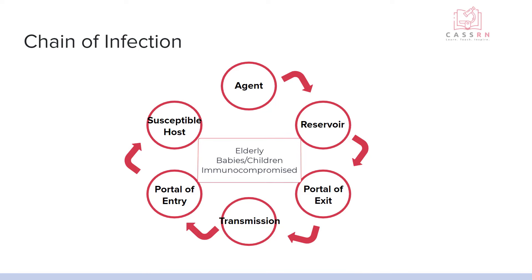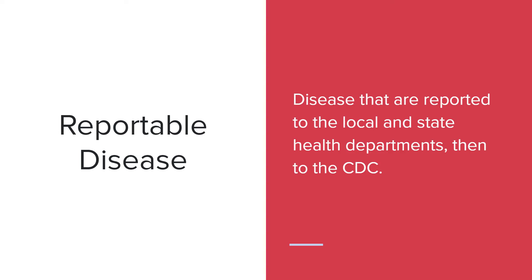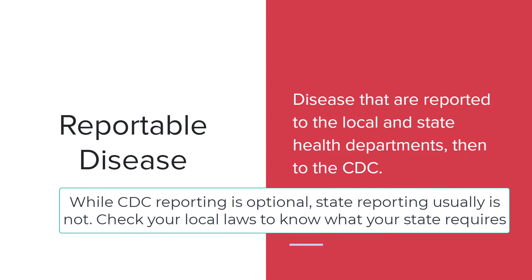The people most susceptible to communicable diseases are the elderly, the young, and people with immune problems. Reportable diseases are diseases that are reported to the local and state health departments and then onto the CDC. Not every state reports to the CDC, but this is really valuable because this is where we get our data and statistics for communicable diseases so we can track outbreaks and what's going on in certain areas.